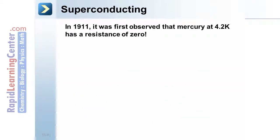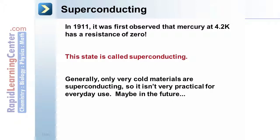Superconducting. In 1911, it was observed that mercury, the liquid, at 4.2 Kelvin has a resistance of zero. No electrical resistance whatsoever. Keep in mind, 4.2 Kelvin is approximately negative 269 Celsius. This state is called superconducting. Generally, only very cold materials are superconducting, so it isn't very practical for everyday use. Maybe in the future. This is an area of physics research.